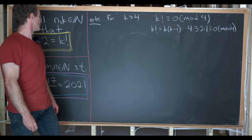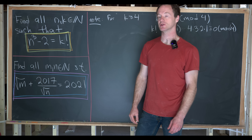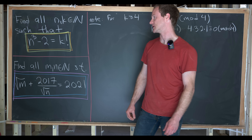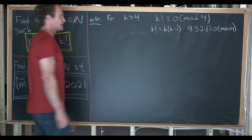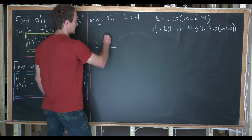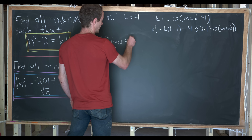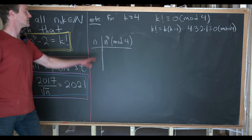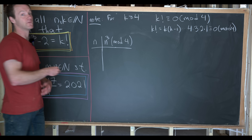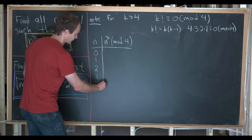Next, we want to look at the possible perfect cubes modulo 4. Notice that this is really going to restrict our possibilities for solutions. I'll make a little chart with values of n and values of n cubed modulo 4. Since I'm working mod 4, I only need to look at four equivalence classes: 0, 1, 2, and 3.